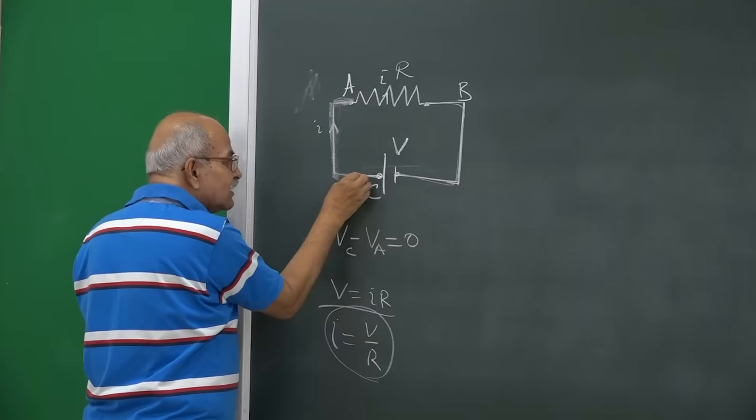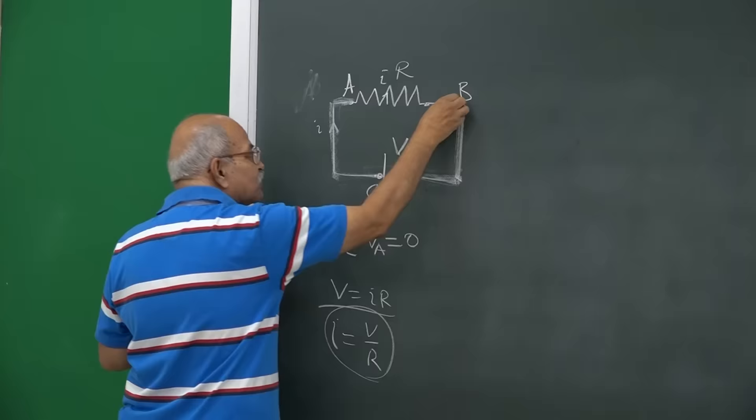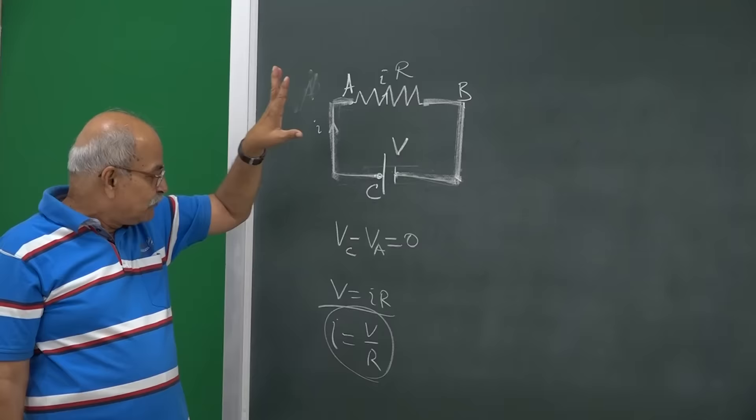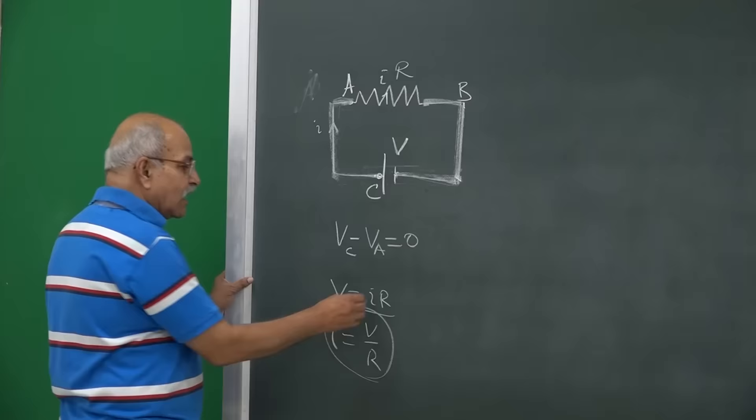The conducting wires are supposed to be resistanceless, all the resistance is here and the resistance of this wire we say it is very small and we neglect it. If you do that from this equation itself, you can see that if this R is 0,